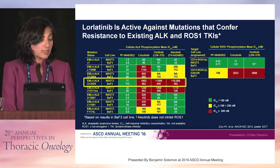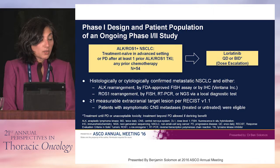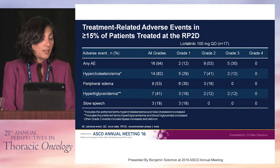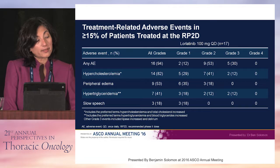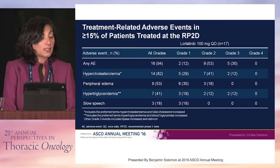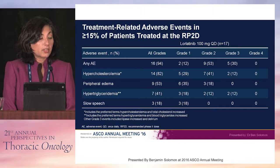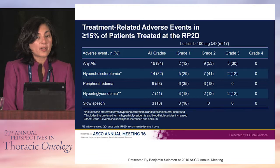Dr. Solomon reported results of the phase 1 study of lorlatinib. The final MTD was determined to be 100 milligrams a day. The adverse event profile is very distinct from prior ALK inhibitors — patients may develop hypercholesterolemia requiring lipid-lowering agents and also peripheral neuropathy. There is awareness of possible CNS effects: this drug has quite good CNS penetration, but a possible implication is more cognitive CNS effects. The degree of that is unclear and is being evaluated on clinical trials.